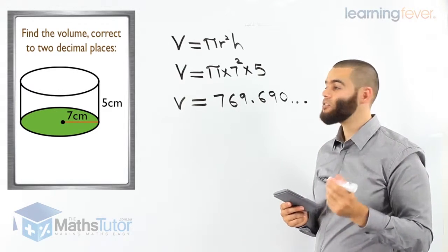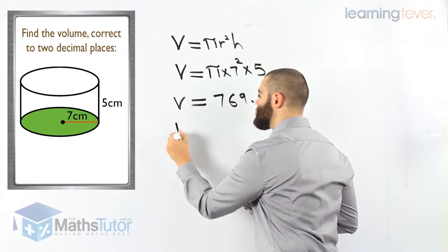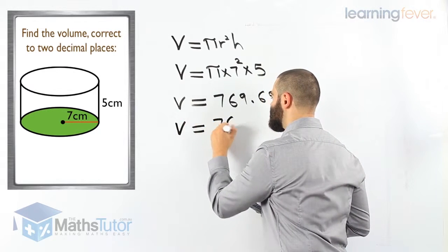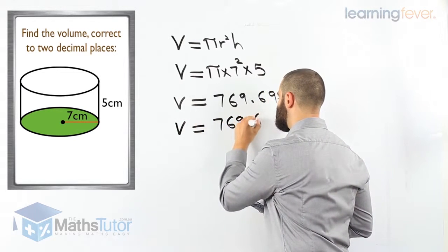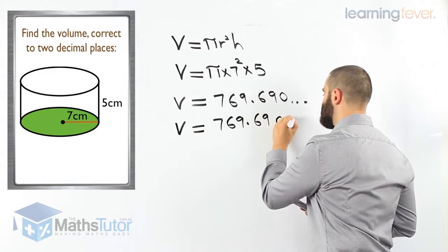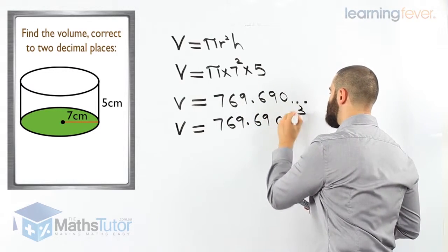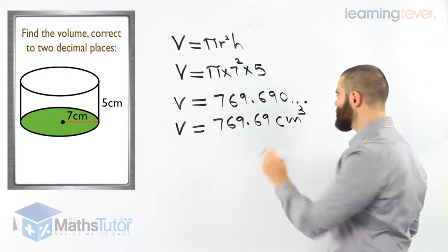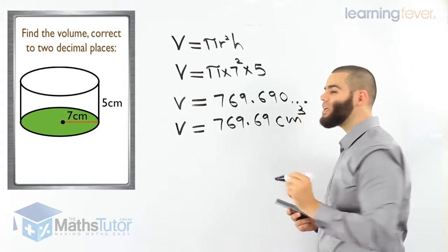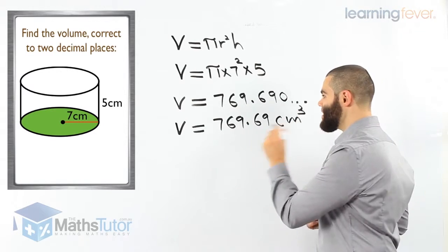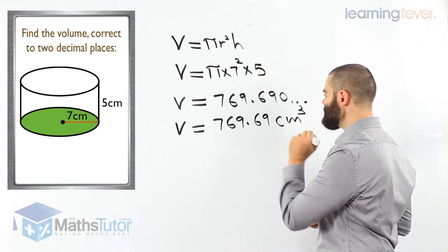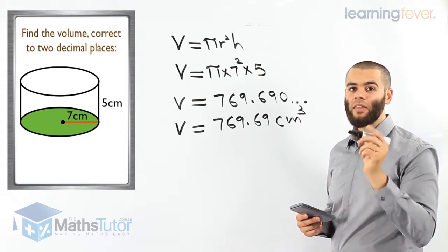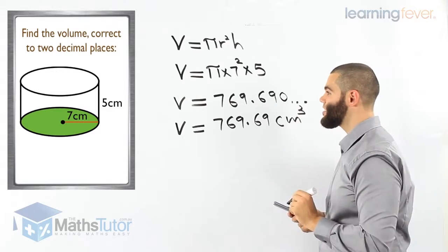We are asked to round off the volume to two decimal places: 769.69 cubic centimetres. Very important — we are working out volume, so our units are cubic centimetres. 769.69 cubic centimetres is the volume of this cylinder.